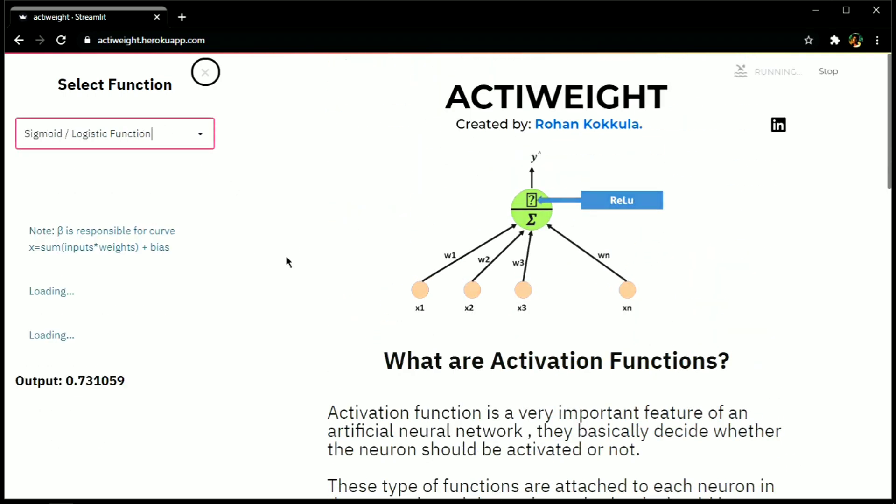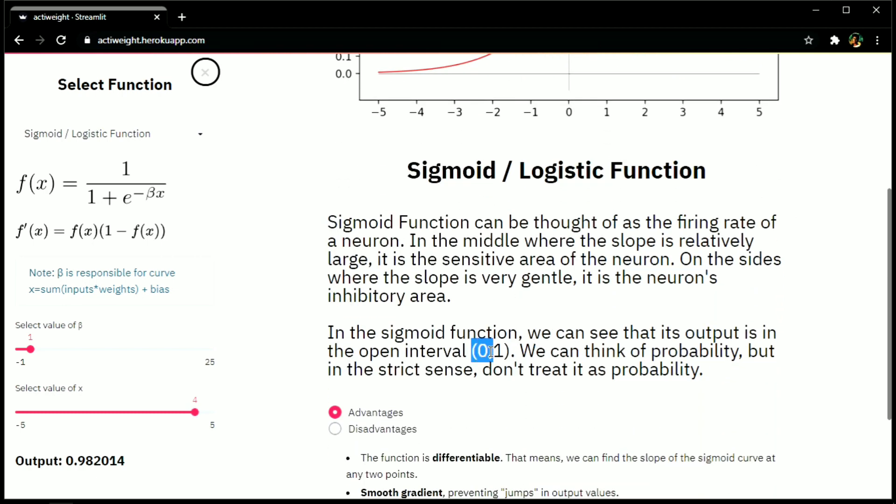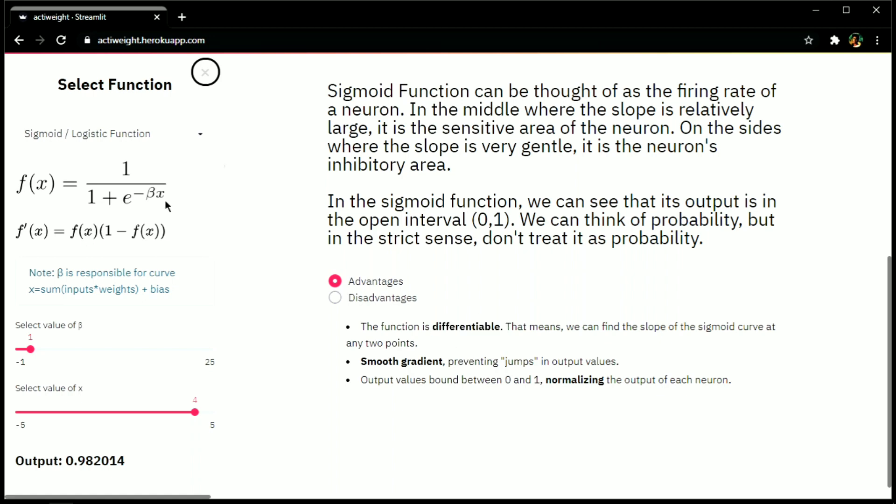So let's start with the very first activation function, sigmoid or logistic function. The formula is 1 upon 1 plus e raised to minus beta x. Here beta is responsible for the smoothness of the curve. If you keep on increasing the value of beta, there will be a point where sigmoid function will be a replica of stepwise function. Basically sigmoid function normalizes this input into 0 to 1 range. So whatever your input value be, the output will always be in the range of 0 and 1.